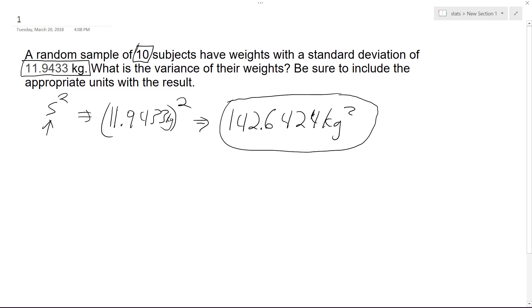So standard deviation squared, 11.9433 squared, gives us 142.6424 and we round to four decimal places because in our original we had four decimal places in our standard deviation.